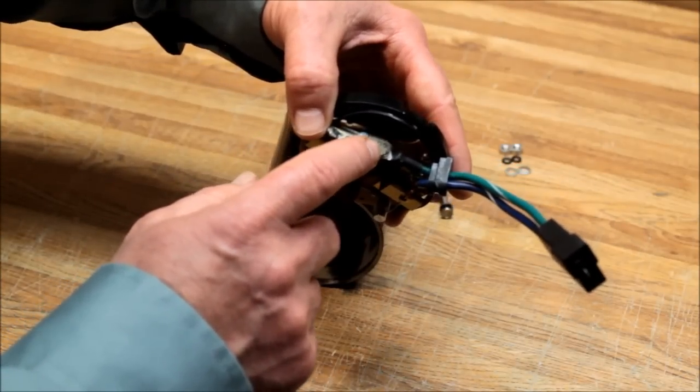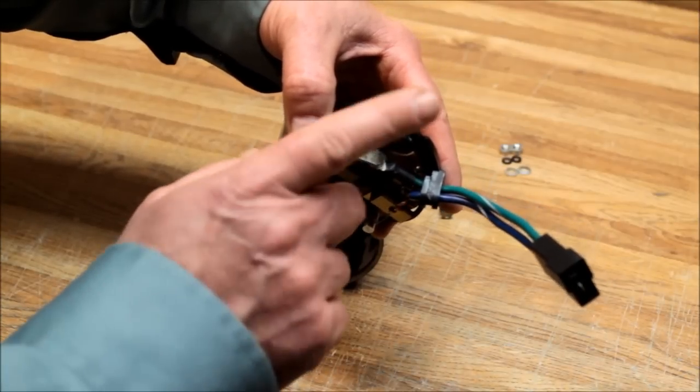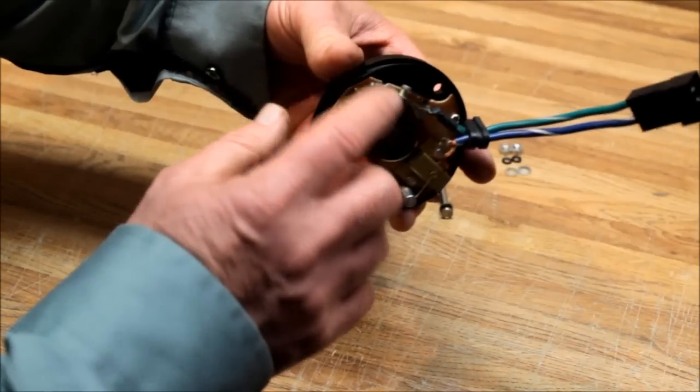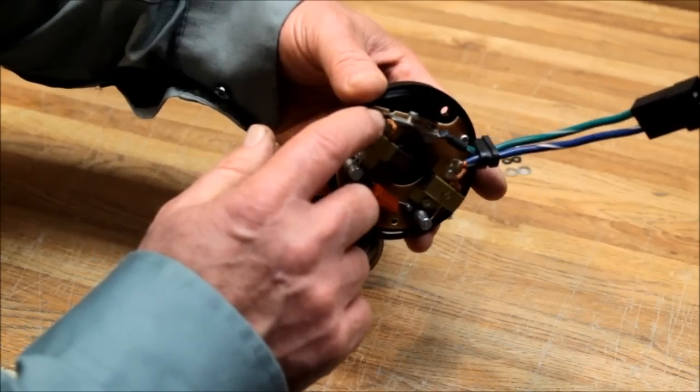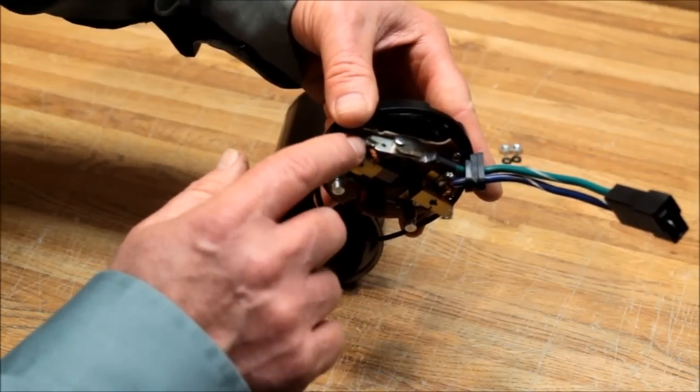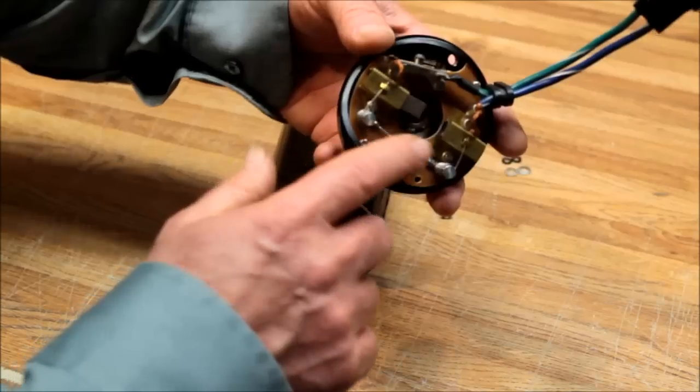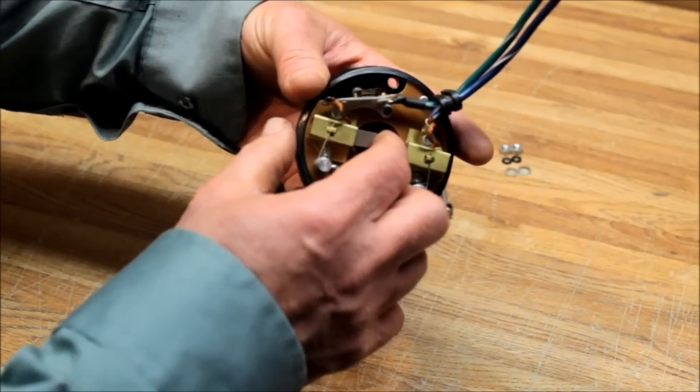These contact points can wear out. This is a piece of bimetal. As it heats up from the resistance to current flow, it will open up and quit. You got to look at those. Also a point to look at on these units is where this brush solders to this lead on this bimetal contact point. These can go bad, you have to look out for that.